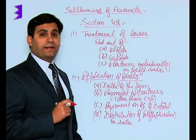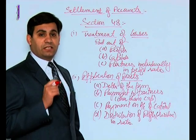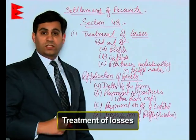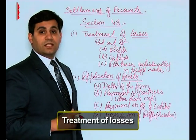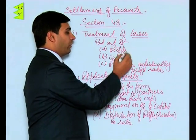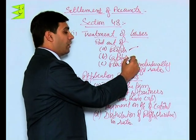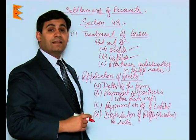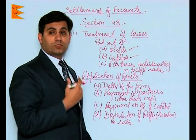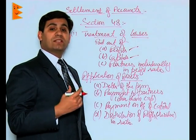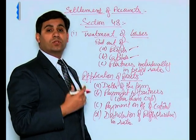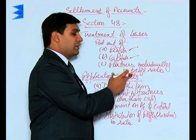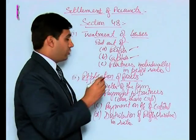There are certain special items that have to be taken care of — for example, the treatment of losses. In case there are certain losses, they should be paid out of profits. If profits are not available, then out of capital. And if capital is also exhausted, then the remaining portion of losses would be brought in by the partners in their profit sharing ratio.